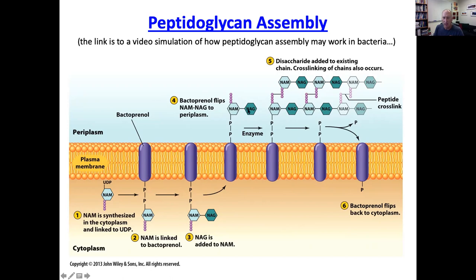The subunit would be connected to an existing chain, as shown in this diagram, and then it's going to be cross-linked to an adjacent chain of peptidoglycan to make that meshwork. Once the bactoprenol has released its subunit, it will flip back around so that it can pick up a new one.